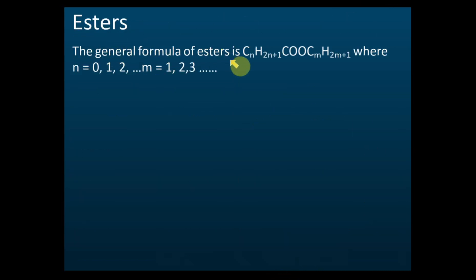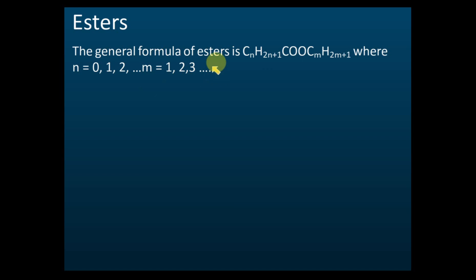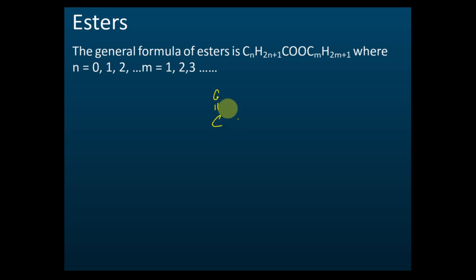The general formula of ester is CₙH₂ₙ₊₁COOCₘ, where n equals 0, 1, 2, 3. The functional group of ester is COO. And the general formula is written with both n and m values.